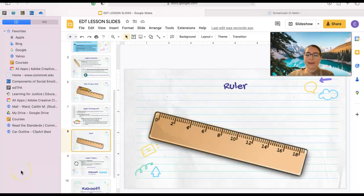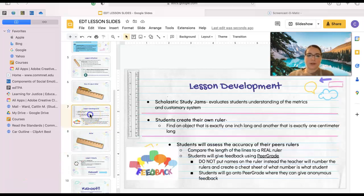Now that everybody has created their ruler, we are going to evaluate our peers' rulers. So we are going to use Peer Grade and we're going to compare the lengths of the lines on our peers' rulers to a real ruler. So when creating our ruler, I told us how important it was for us not to put our names on the ruler.